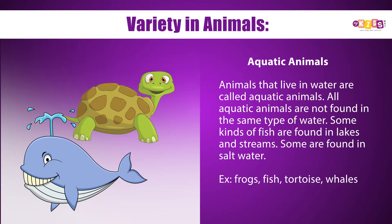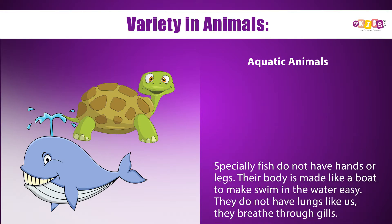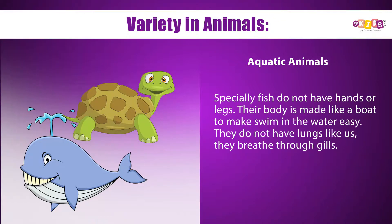Some others have adhesive pads like geckos and frogs to grasp branches. Aquatic animals: Animals that live in water are called aquatic animals. Some kinds of fish are found in lakes and streams, some are found in salt water — example: frogs, fish, tortoise, whales. Fish do not have hands or legs; their body is shaped like a boat to make swimming easy. They breathe through gills instead of lungs.